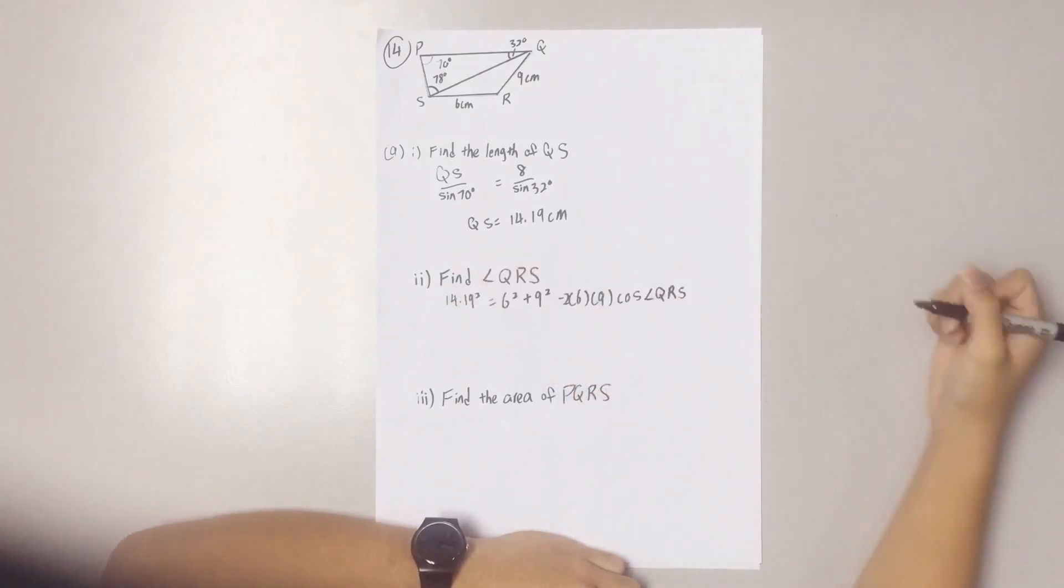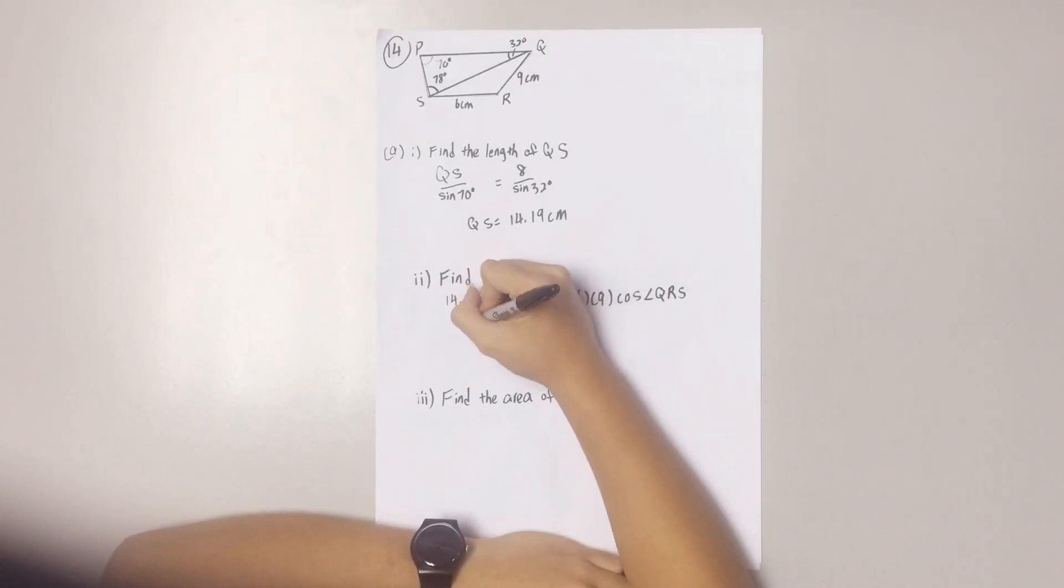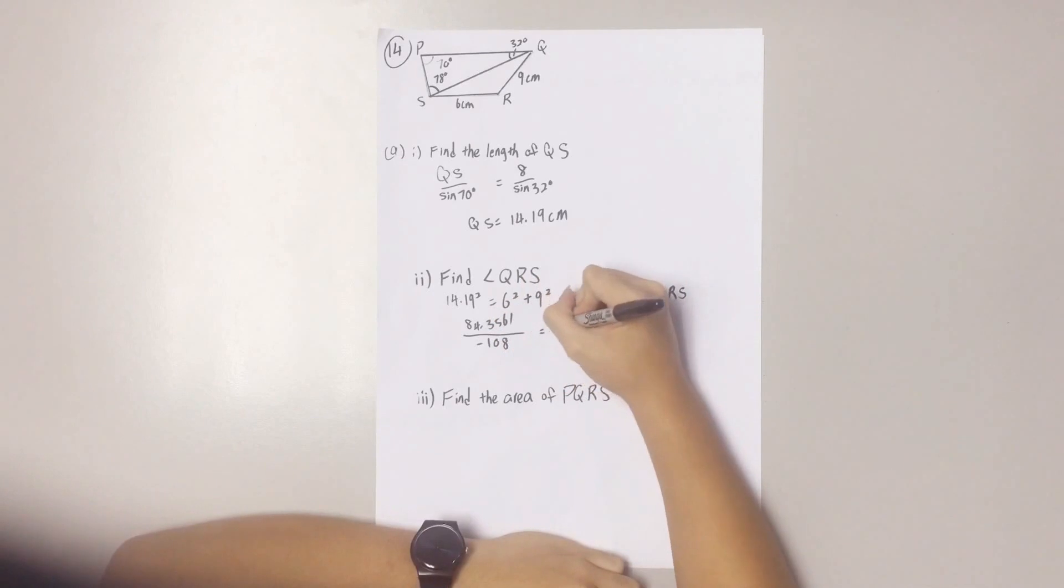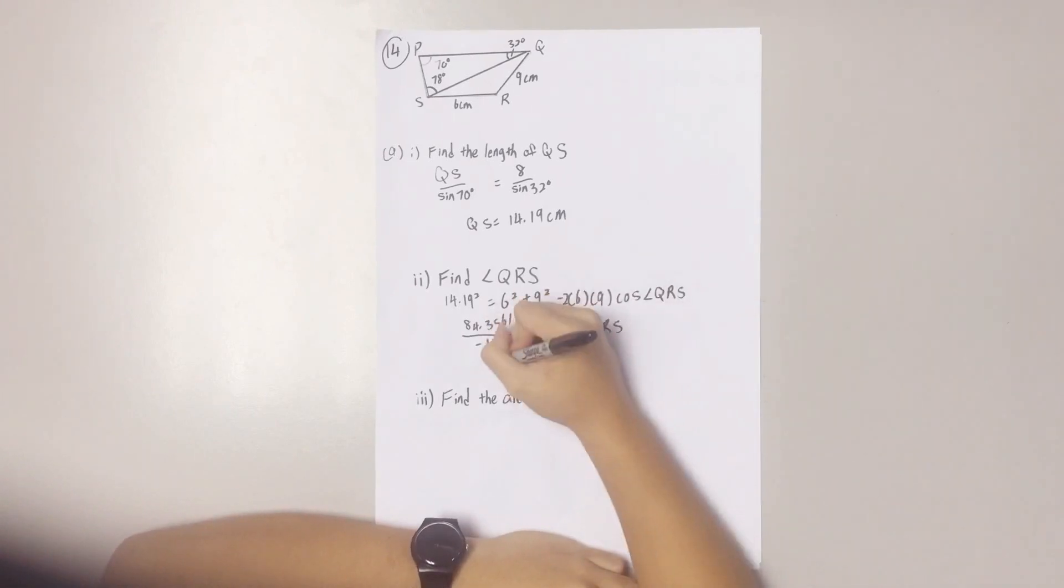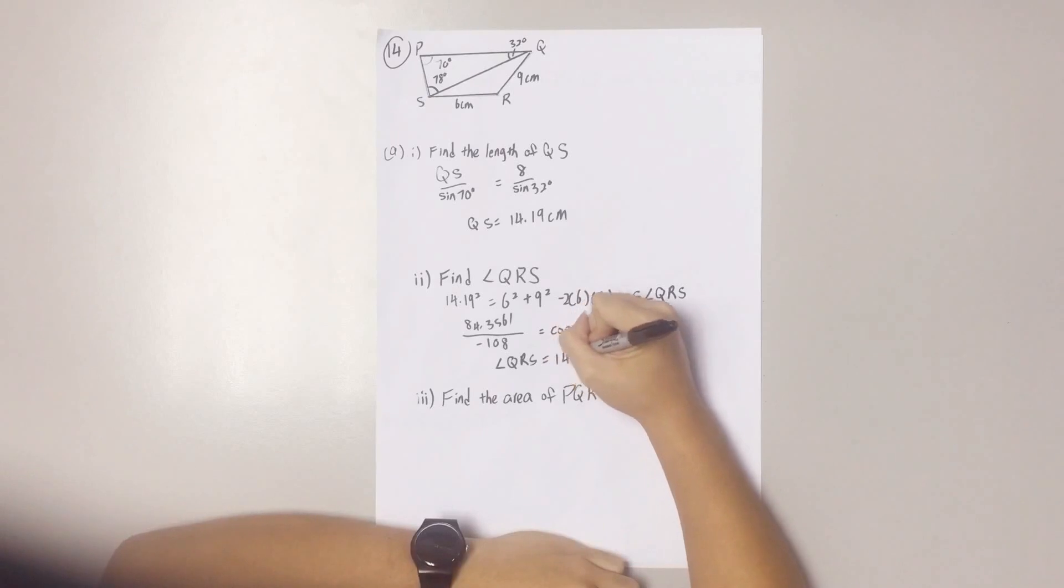Now, you simplify this. Your answer angle QRS is 141.36 degrees.